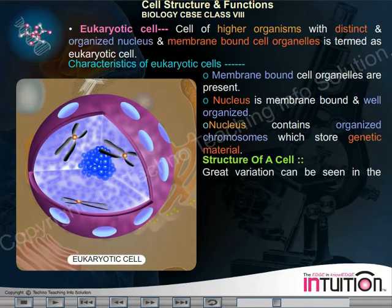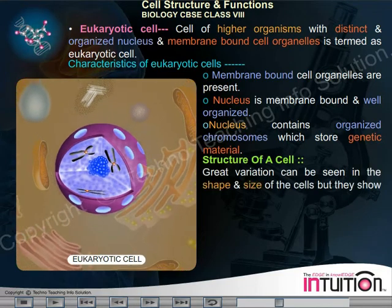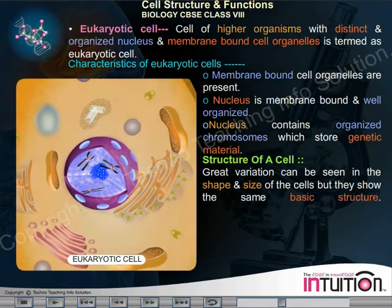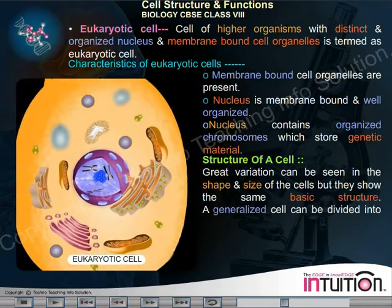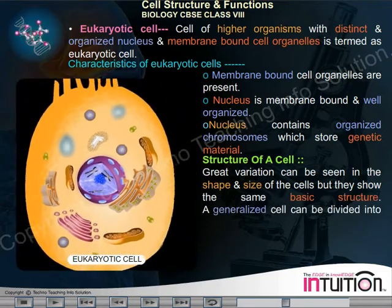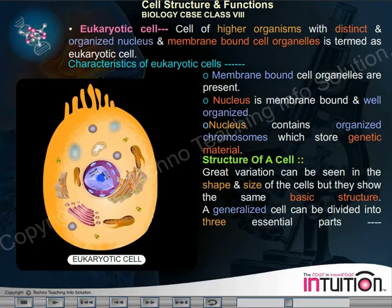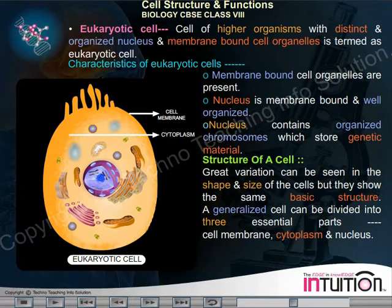Structure of a cell. Great variation can be seen in the shape and size of cells, but they show the same basic structure. A generalized cell can be divided into three essential parts: cell membrane, cytoplasm, and nucleus.